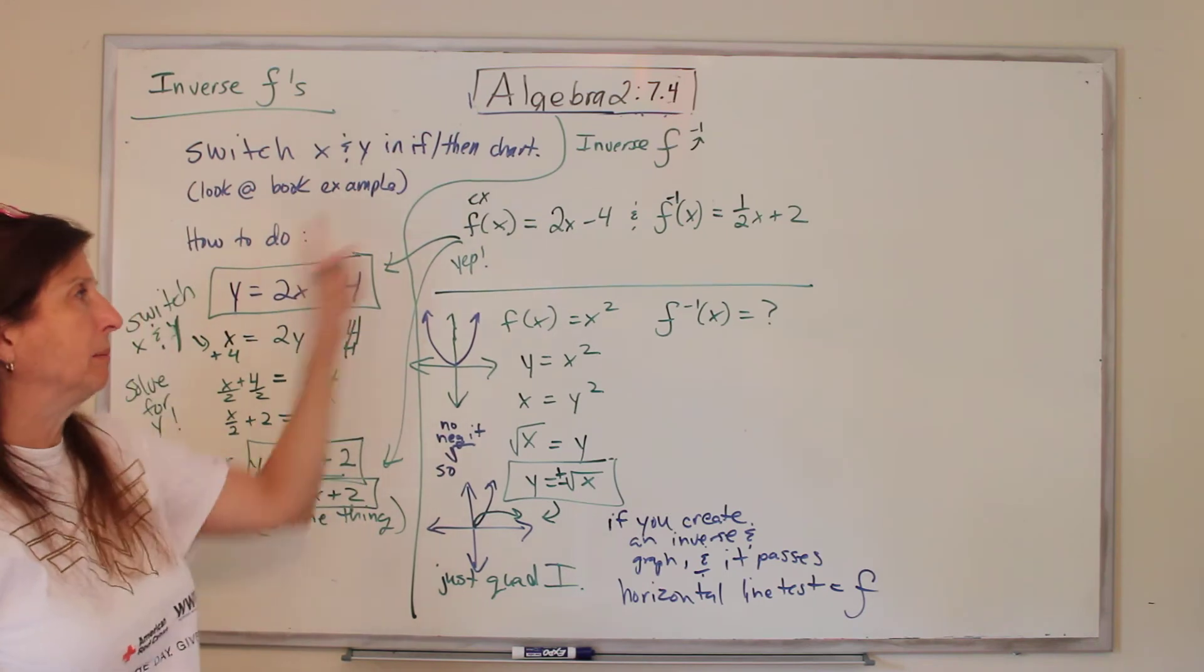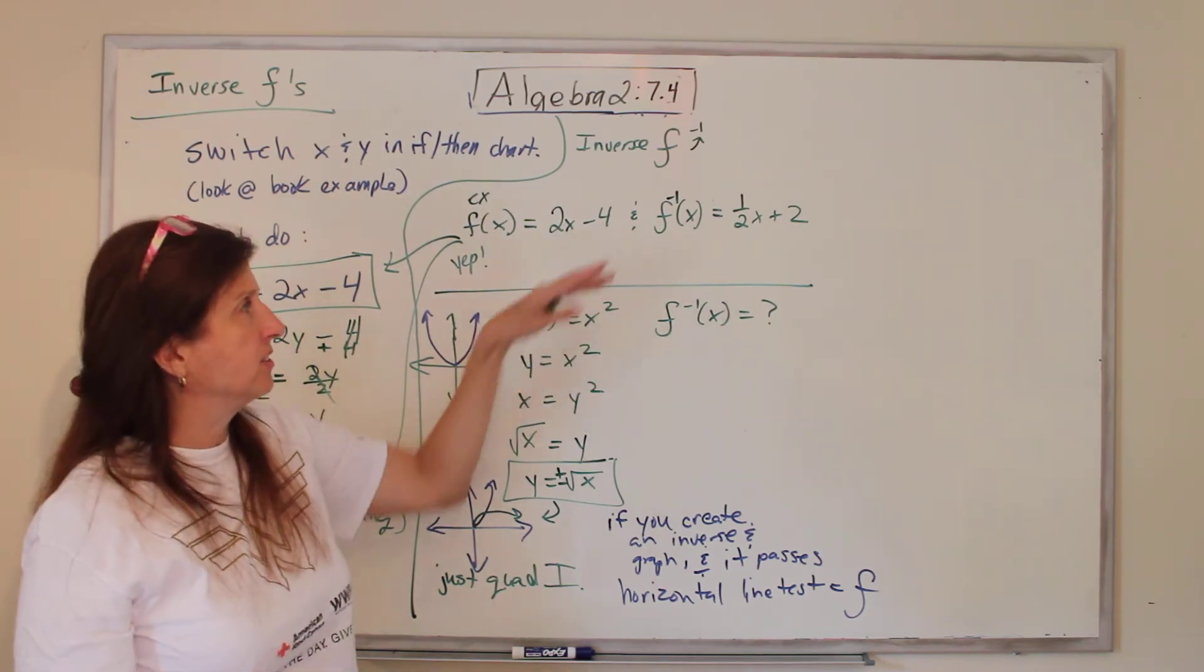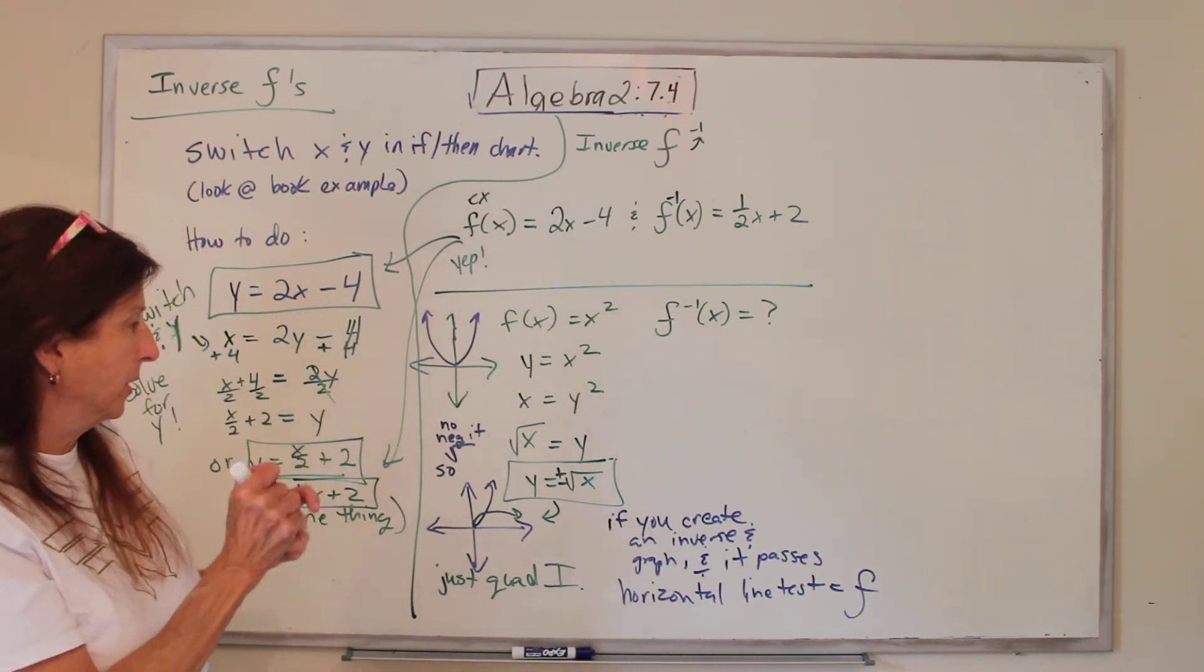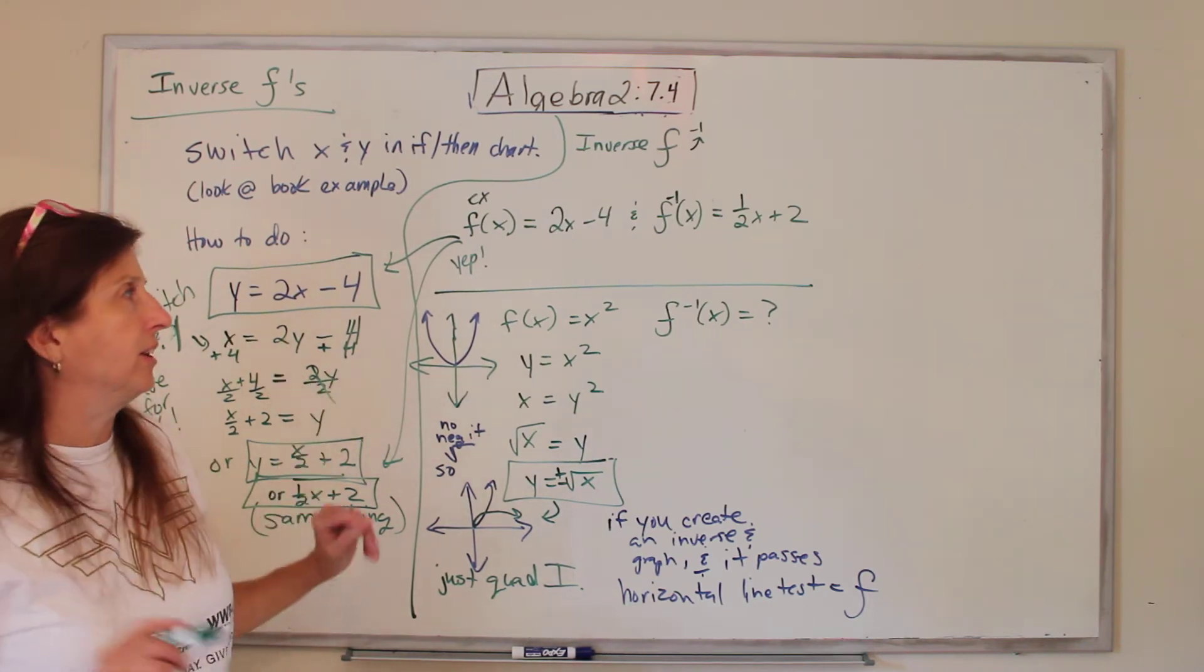They also show you in the book that you can do them both again, flipping them and solving it. And it shows you can prove they're inverses too, but we already did the work. We don't have to do it.